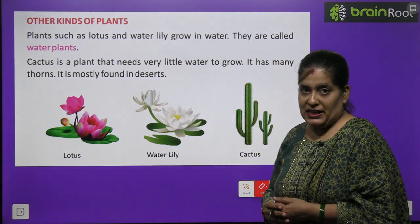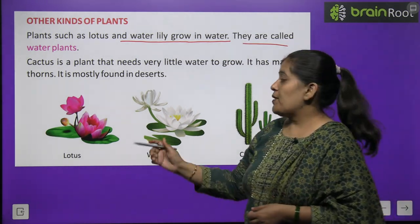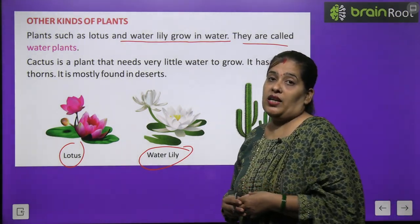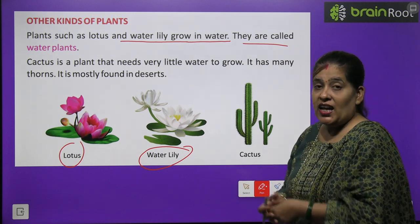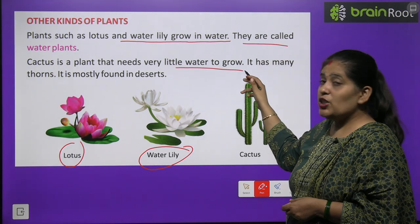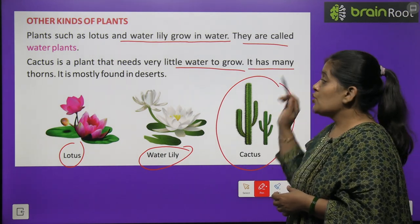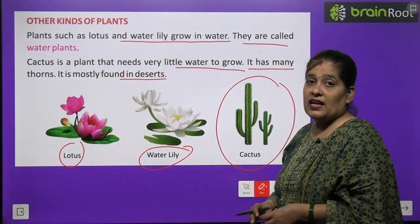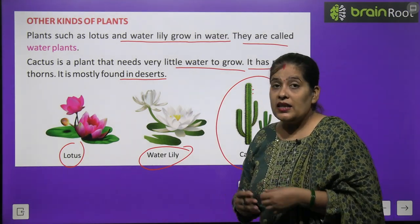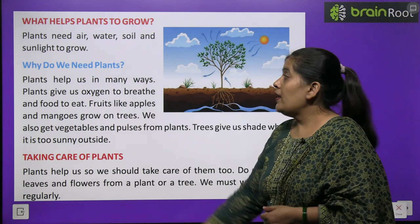Now we will learn about other kinds of plants. Plants such as lotus and water lily grow in water — they are called water plants. कमल का फूल और water lily ये पौधे पानी में उगते हैं। Lotus हमारा national flower है। Cactus is a plant that needs very little water to grow. Cactus के पौधे को बहुत थोड़े पानी की आवश्यकता होती है। It has many thorns and is mostly found in desert — cactus का पौधा अधिकतर रेगिस्तान में पाया जाता है।